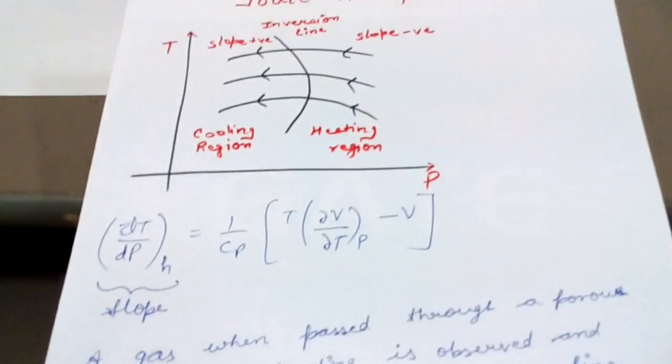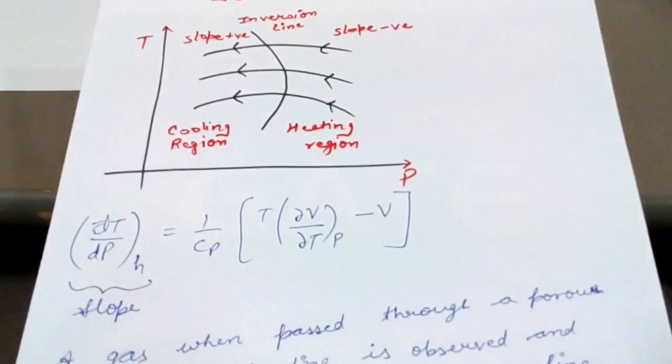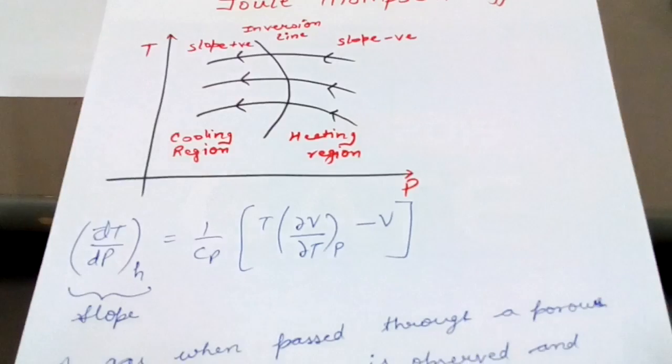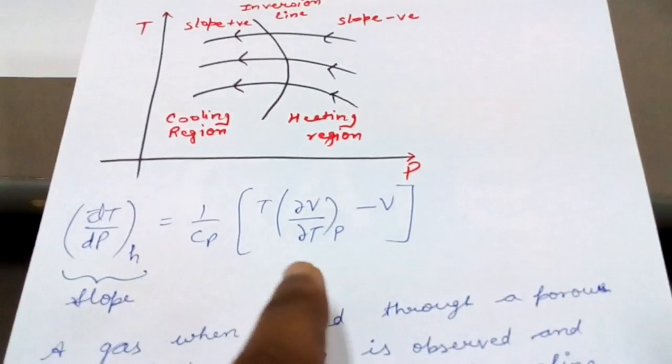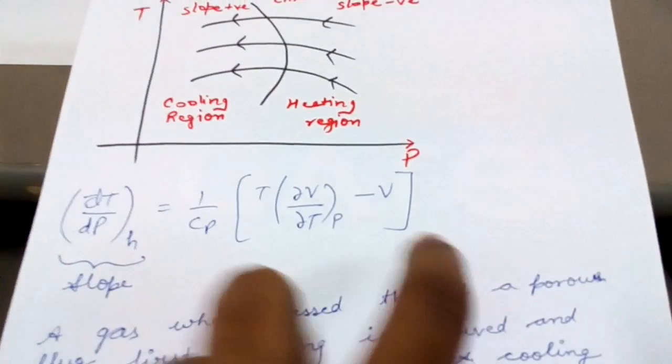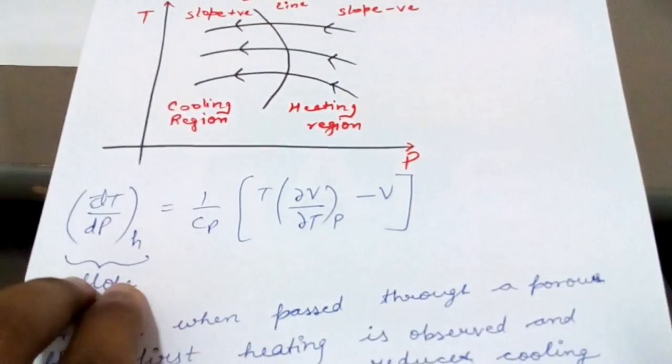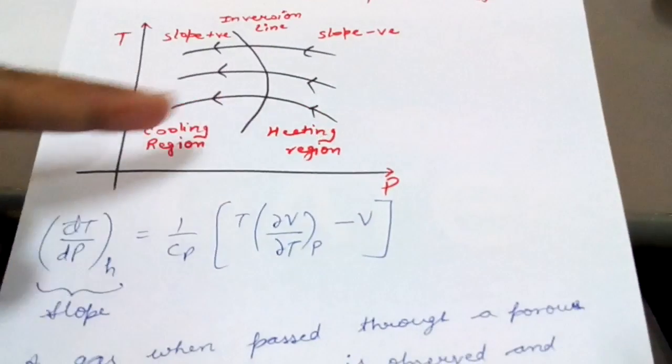To obtain the refrigeration effect, the gas which we have to use for refrigeration, its Joule-Thompson coefficient should be greater than 1. Or 1 upon Cp, T del V by del T at constant pressure minus V, this value should be greater than 1. Or dT by dP at constant enthalpy should be greater than 1. This means the slope should be greater than 1, or it should operate in the cooling region.